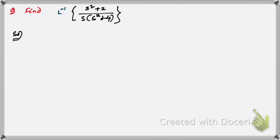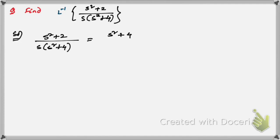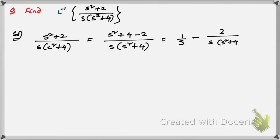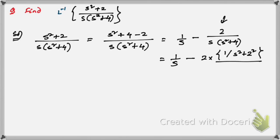Now the last problem: s squared plus 2 by s into s squared plus 4. This can be simplified as s squared plus 4 minus 2 by s into s squared plus 4, which gives 1 by s minus 2 by s into s squared plus 4. The second part can be written as 2 times 1 by s squared plus 2 squared, all divided by s — this is in the form f of s by s.